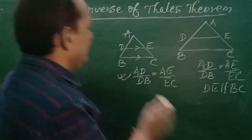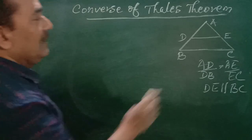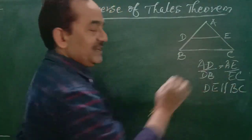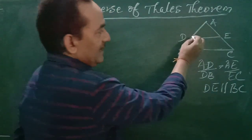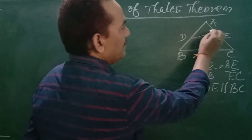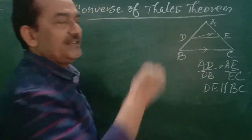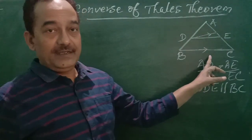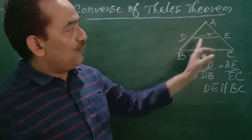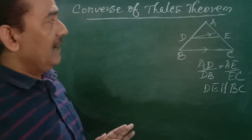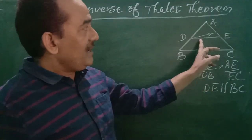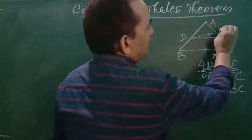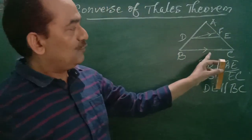So we have to prove DE is parallel to BC. To prove this, we construct a parallel line. Suppose DF is parallel to BC.